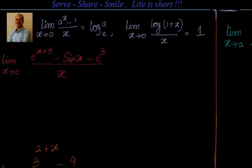For sin x we know that as x tends to 0, sin x divided by x equals 1. For e^x we know as x tends to 0, e^x minus 1 divided by x equals 1 — the same formula where you substitute a equal to e. So let's go ahead and try to simplify this.